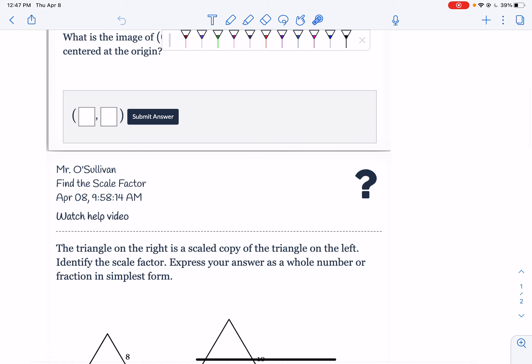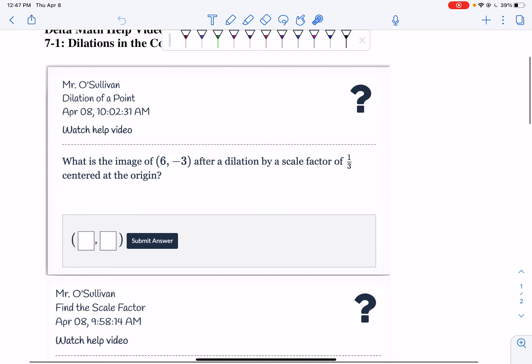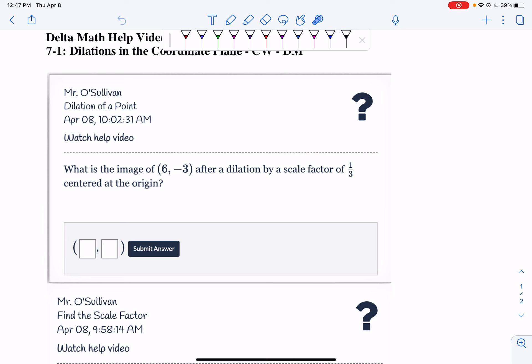All right. So what we want to do is, for our first question, it says: what is the image of (6,-3) after dilation by a scale factor of 1/3 centered at the origin? So if you look, I want to dilate this point right here, my (6,-3), and my scale factor is 1/3.